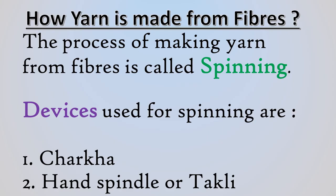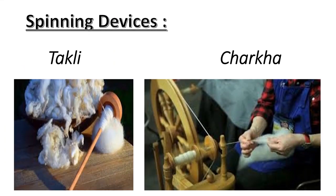Devices used for spinning are: number 1 — Charkha, and number 2 — Hand Spindle or Takli. In these pictures, you can have a look at both devices which are used for spinning fiber into yarn, namely Takli and Charkha.